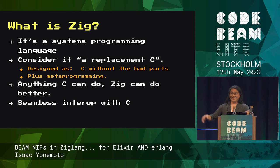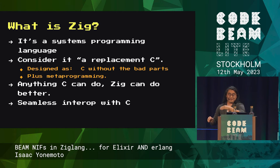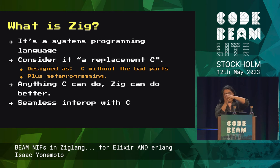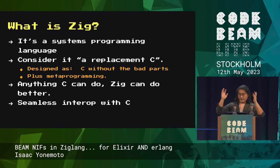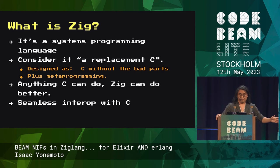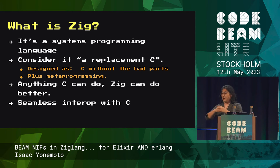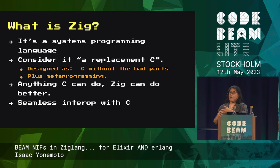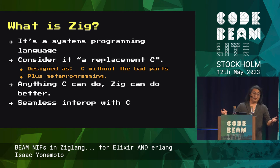Zig has metaprogramming, so you can have generics. I'm not going to go over specifics of the Zig syntax — I'll just throw you into it. The philosophy of Zig is that anything that C can do, Zig can do better. That goes from handling all sorts of weird legacy C things all the way to the build chain. No make, no automake, no autoconf — none of these things that can have sharp edges. As a result, Zig winds up having a very nice developer experience.